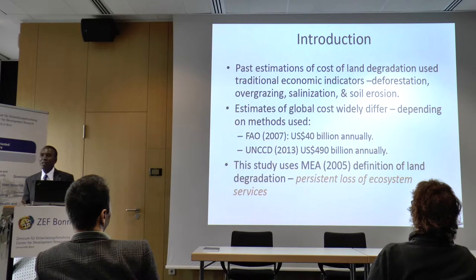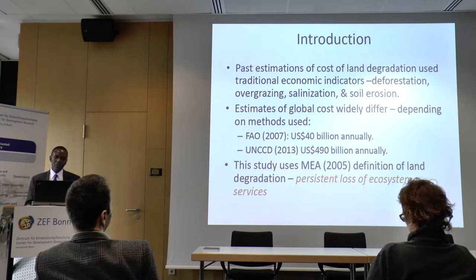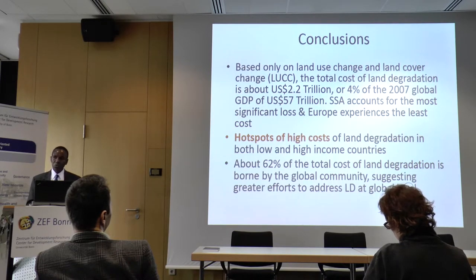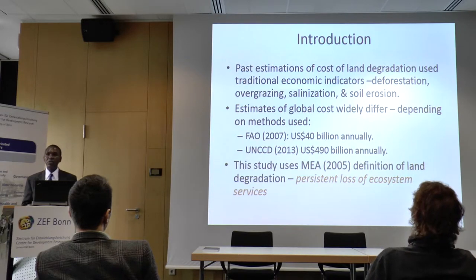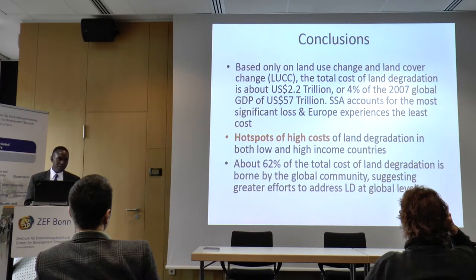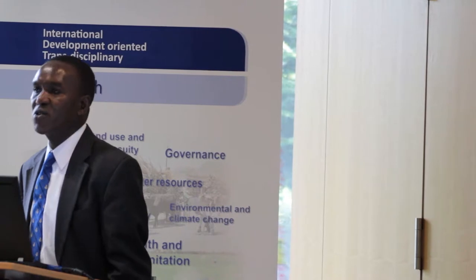This is not the first study on the cost of land degradation. FAO did one around 2007, estimating the total cost at only $40 billion US dollars per year. UNCCD reported about $490 billion last year. Compare those with our figure of $2.2 trillion. The reason our numbers are so dramatically different is that we are using the total economic value consistent with the Millennium Ecosystem Assessment definition of land degradation.